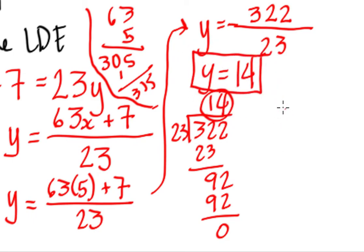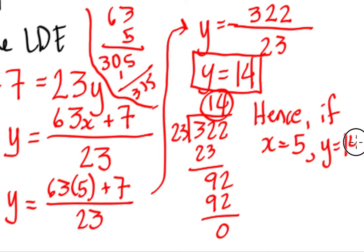So therefore, we can say, hence, if X is 5, Y is equal to 14. And this is a solution. Actually, this is a solution to our LDE because they are integer solutions. 5 is an integer. Y is an integer. Wherein both of them are integers. Since both of them are integers, they should be part of the solution to the Diophantine equation since both of them are integers.